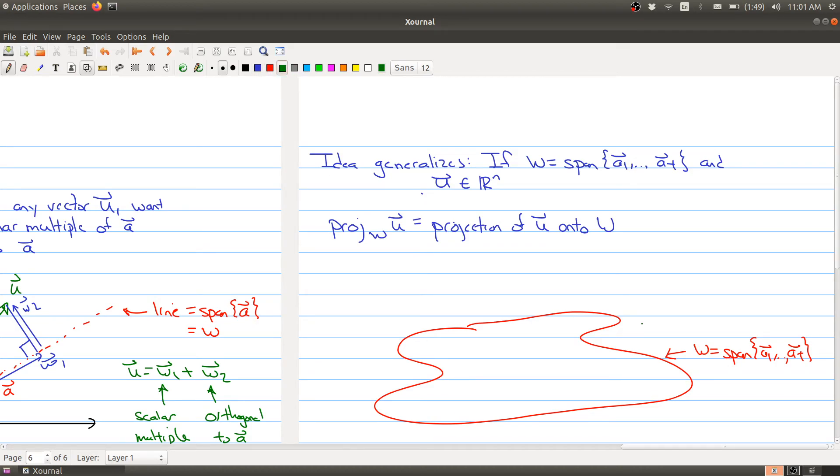We have w, here's some big space spanned by w, and I have a vector that maybe is popping out aside of w, it's not inside of it. So there's my vector u. And what we want to do is project it down into a point inside of w. And this vector, from here to here, is going to be the projection of u onto w.